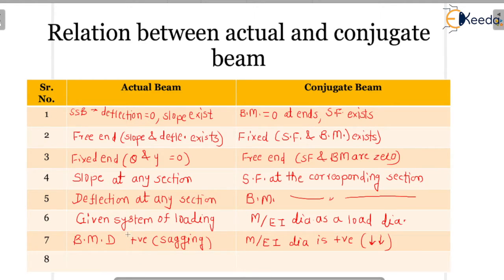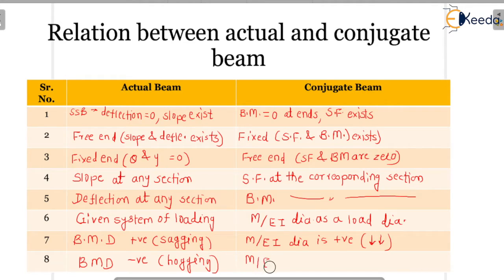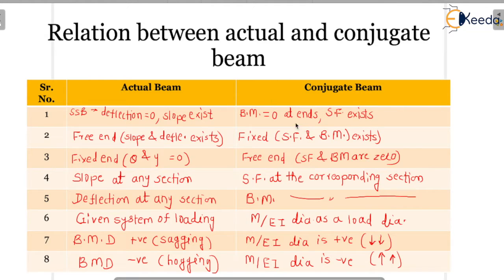If the bending moment diagram is positive, then the M/EI diagram is also positive and loading is downward. But if the bending moment diagram is negative — as we mostly see in a cantilever beam because it is hogging — then the M/EI diagram becomes negative and our loading becomes upward. These are the differences between the actual beam and the conjugate beam.